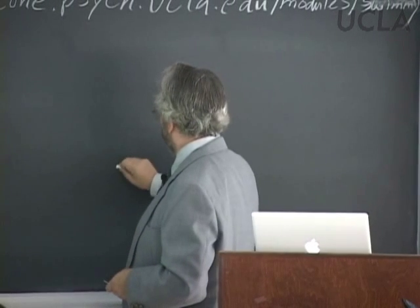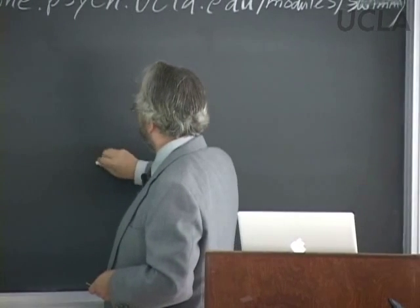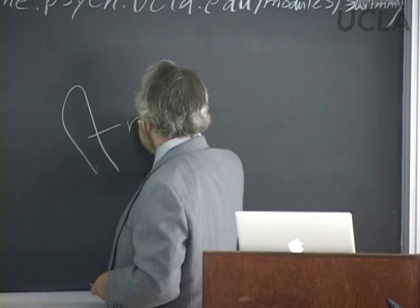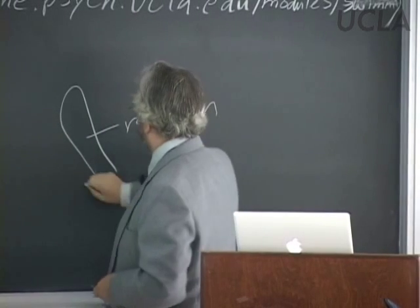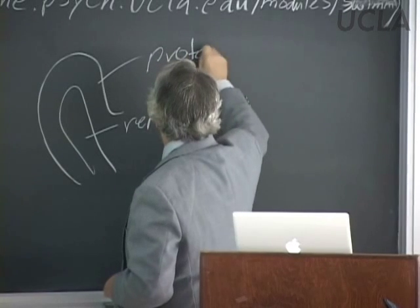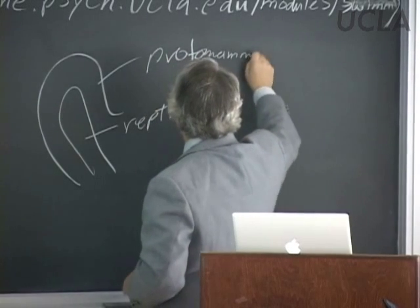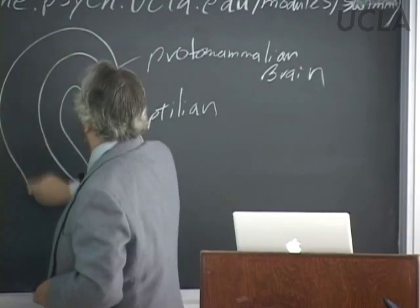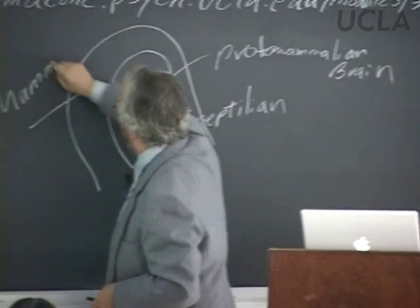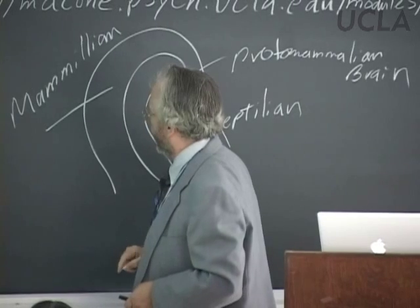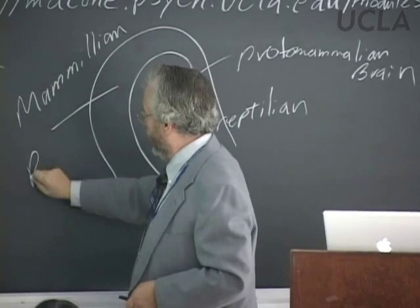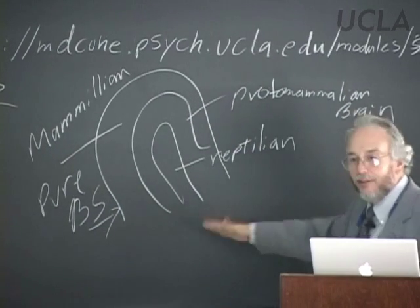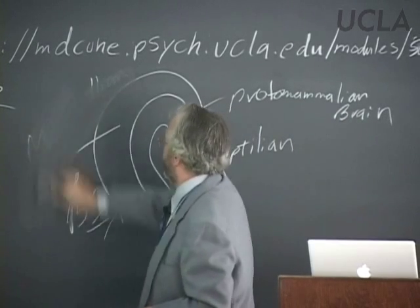McLean also came up with another idea — the triune brain — where you have a reptilian brain, surrounded by a proto-mammalian brain, surrounded by a mammalian brain. This idea is not very good; there's no neuroanatomy that actually backs it up, so if you ever see it, just ignore it. But he did have a good idea about the limbic system — these do seem to be structures that are anatomically and physiologically related.